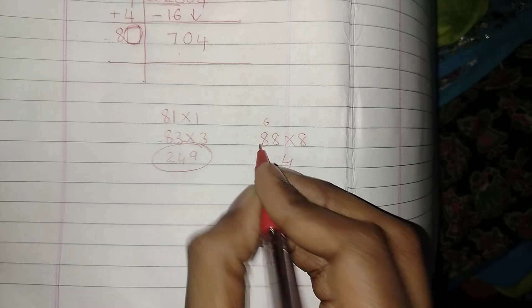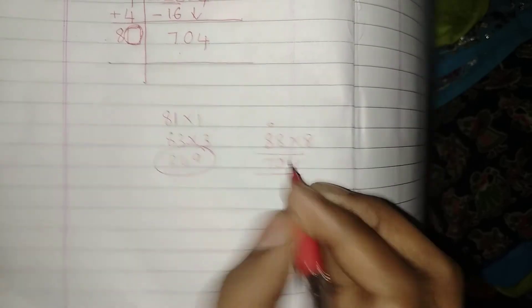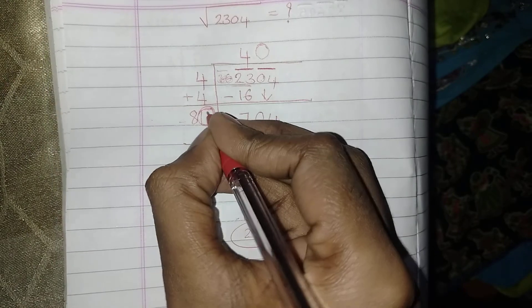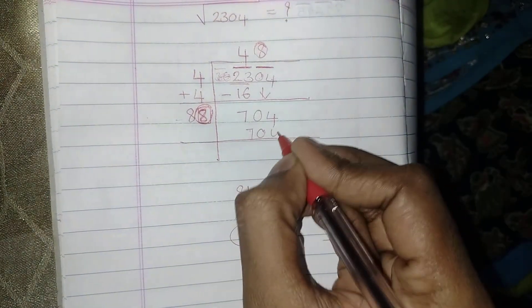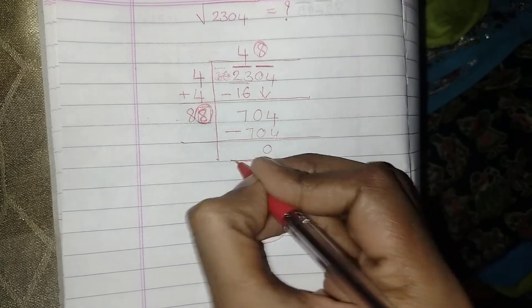So I got the answer as 704. So the suitable digit in the units place here is 8, here is 8, here also 8. 704, when I subtract, I am getting the remainder 0, so let me stop. So root of 2304 is equal to 48.